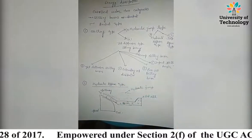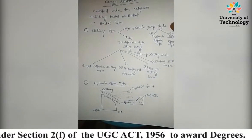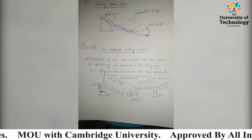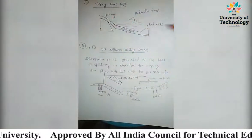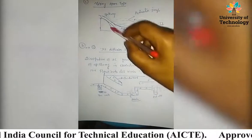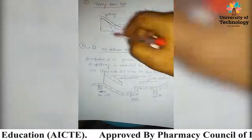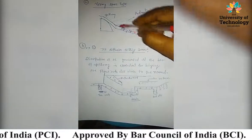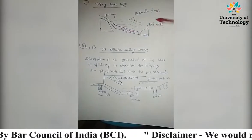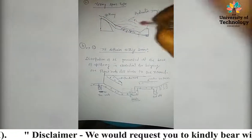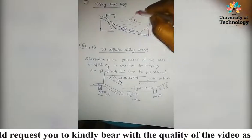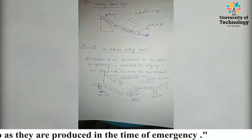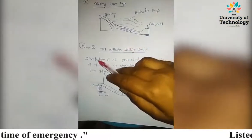The second type is the sloping apron type dissipator. The arrangement is similar, with the spillway present, but here the apron from the toe of the spillway to the end sill is sloping. The hydraulic jump water profile is formed on this sloping apron, and hence it is known as the sloping apron type dissipator.